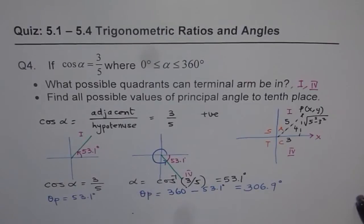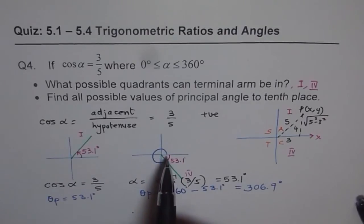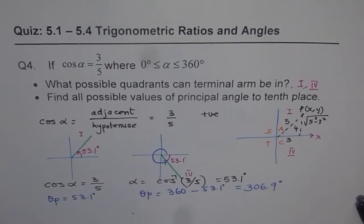Once you know the related acute angle, then in both the cases, we can find the principal angle. Principal angle is the angle which is from positive x-axis, counterclockwise, to the terminal arm. And once you get that, you can write down the answer, round it to tenth place, as asked in the question. Okay? Thank you.